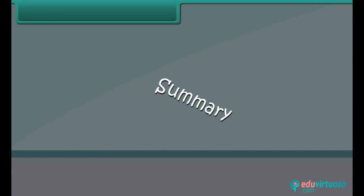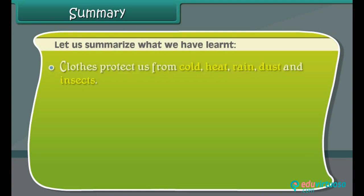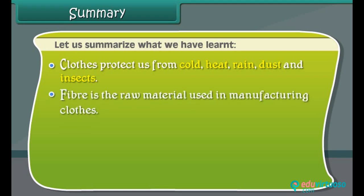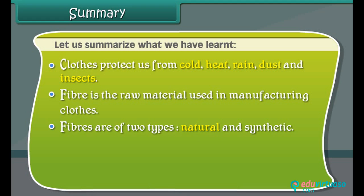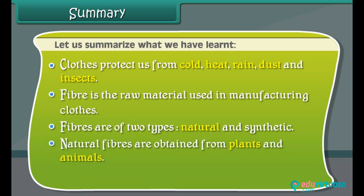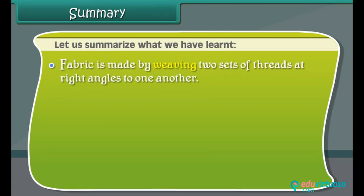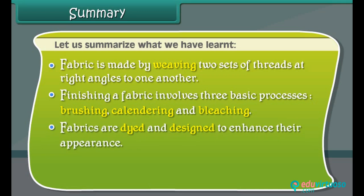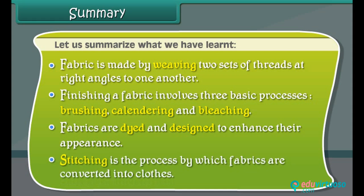Summary: Clothes protect us from cold, heat, rain, dust and insects. Fiber is the raw material used in manufacturing clothes. Fibers are of two types: natural and synthetic. Natural fibers are obtained from plants and animals. Fabric is made by weaving two sets of threads at right angles to one another. Finishing a fabric involves three basic processes: brushing, calendering and bleaching. Fabrics are dyed and designed to enhance their appearance. Stitching is the process by which fabrics are converted into clothes.